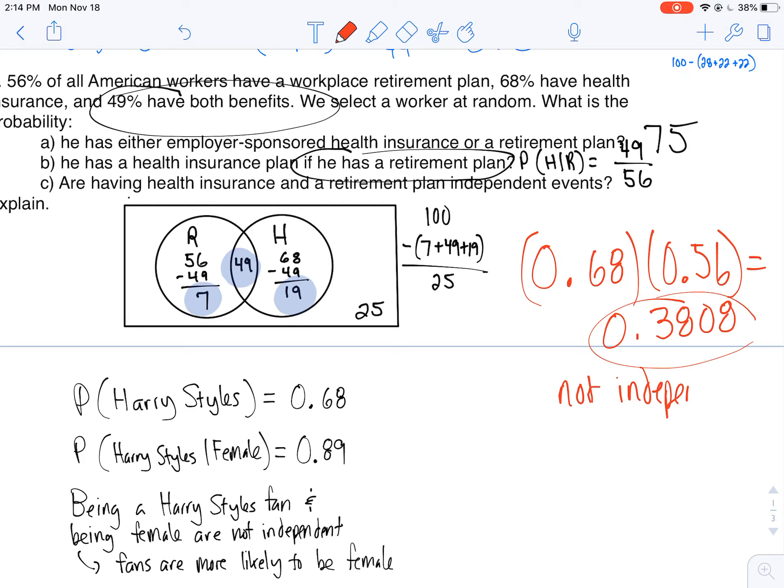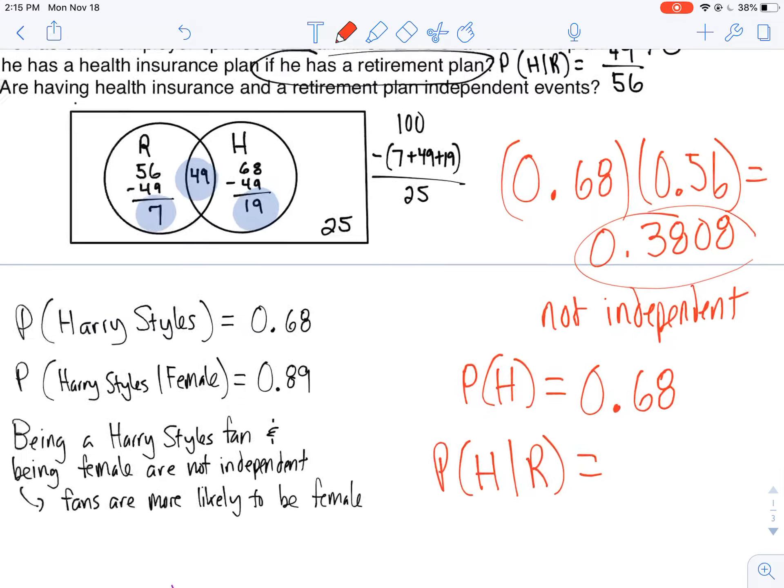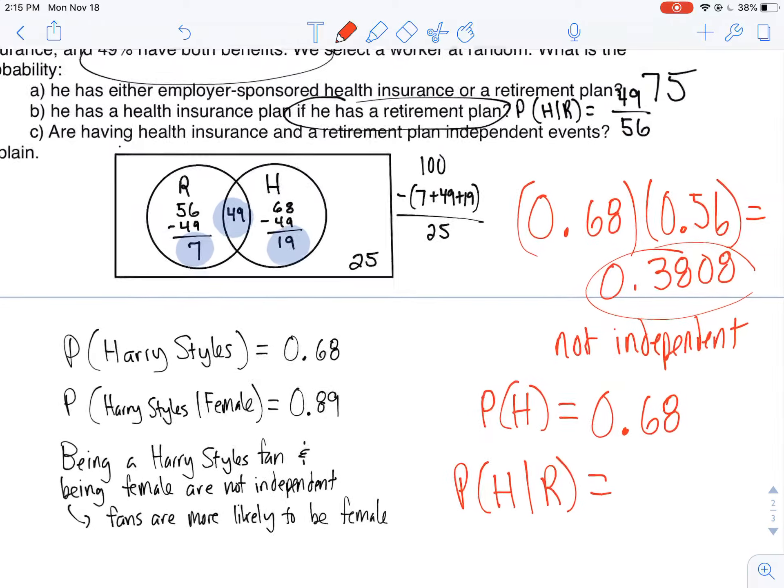That's one way I can prove this. Another way: let's look at the probability of having health insurance. Probability of having health insurance is 68%. Again, when they're asking about probability of having health insurance you can have both. They're not saying only. Now let's see the probability of having health insurance given that I have a retirement plan. So I'm looking within a specific subgroup to see if I'm getting the same proportion.